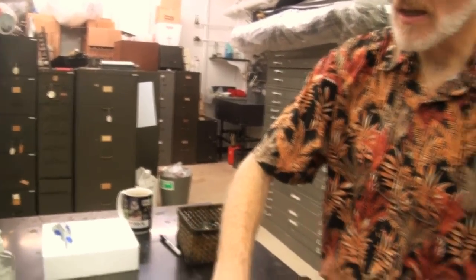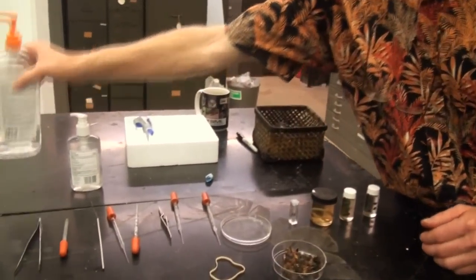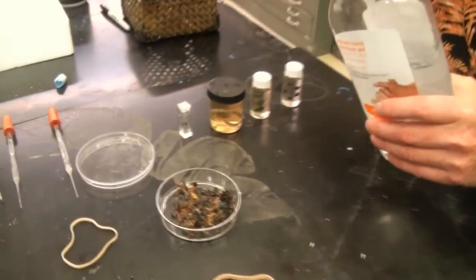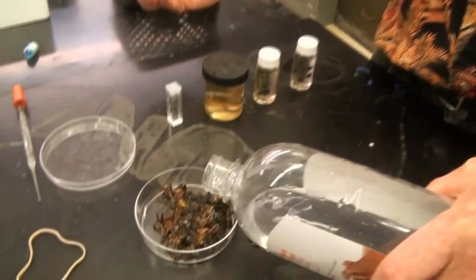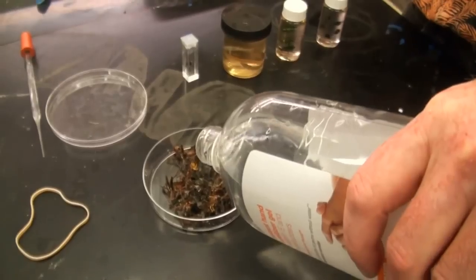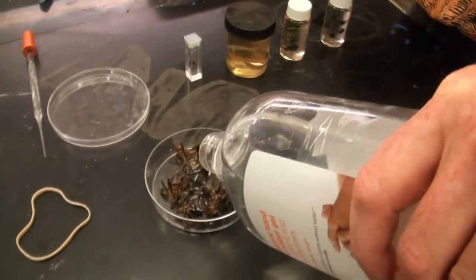Okay, so the first thing we're going to do is we're going to take some hand sanitizer and usually we just take the entire top off of the jar and we're going to dump hand sanitizer into some dried specimens. We're going to let them soak overnight.